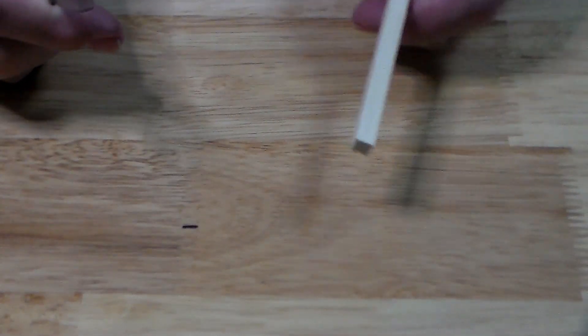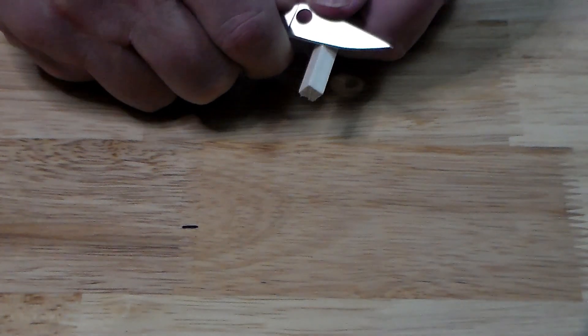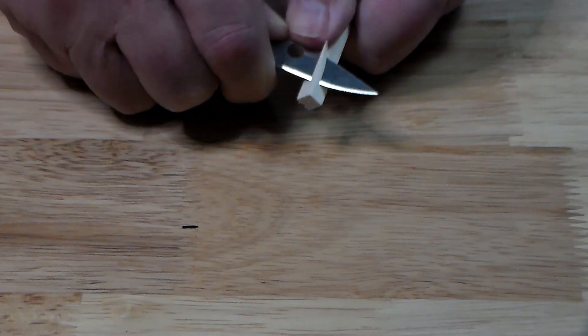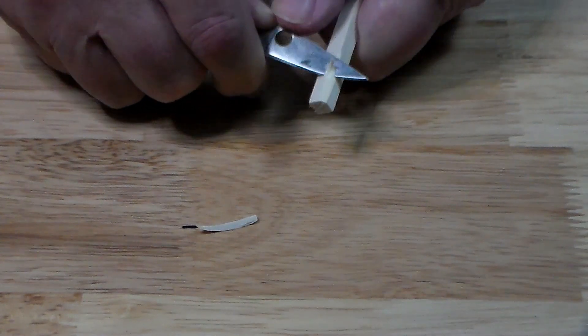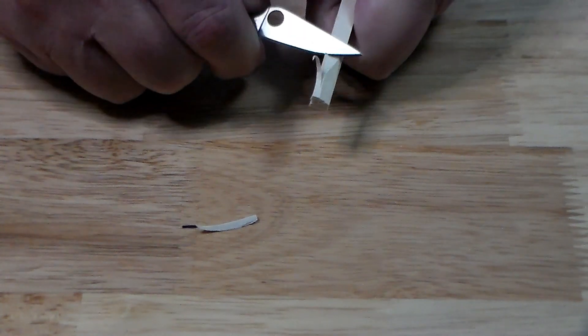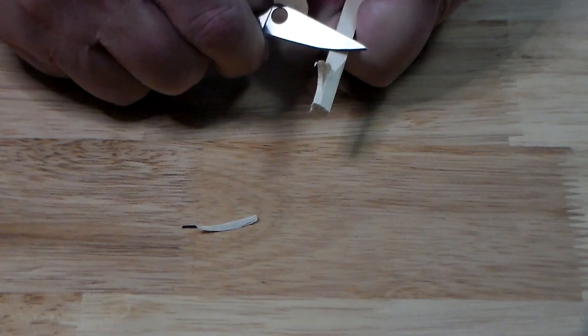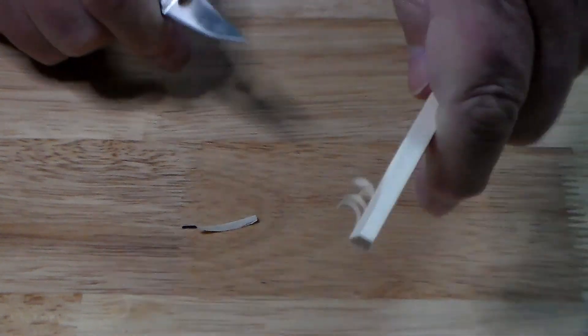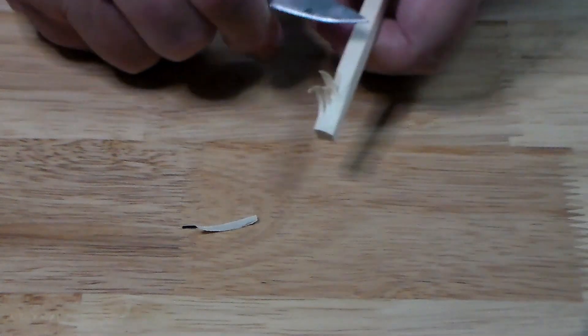Like I said it's very sharp. Just to show how sharp it is, got a little piece of basswood here and you know cuts through that very easily. Make some little feathering there so it does cut pretty good.